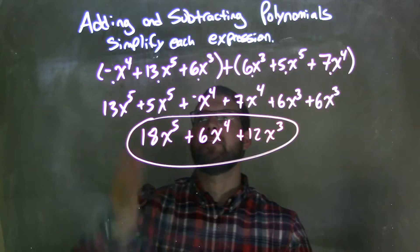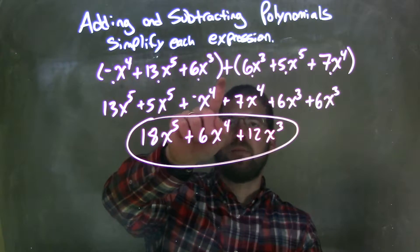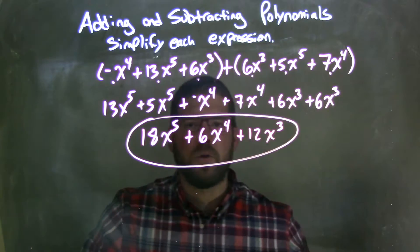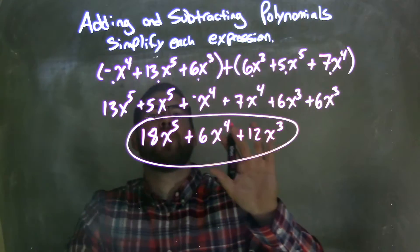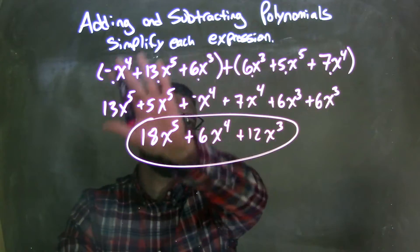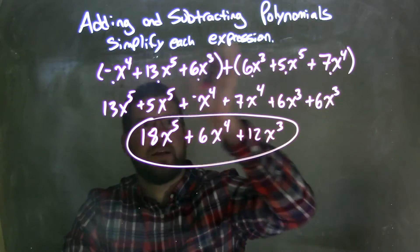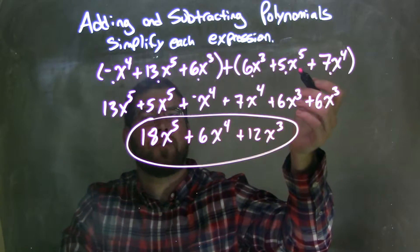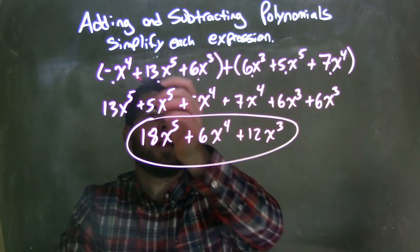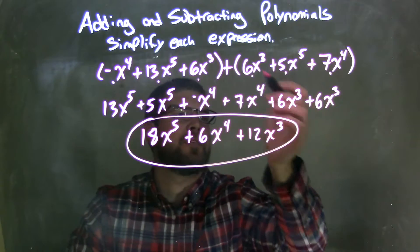So let's recap. We were given, in parentheses, negative x to the fourth plus 13x to the fifth plus 6x to the third, then add parentheses: 6x to the third plus 5x to the fifth plus 7x to the fourth. I rearranged — since it's all addition I can use the commutative property, and there's nothing to simplify within each set of parentheses, so I can rearrange them all together. Highest degrees first: 13x to the fifth, then 5x to the fifth, then negative x to the fourth, then 7x to the fourth, then 6x to the third and 6x to the third.